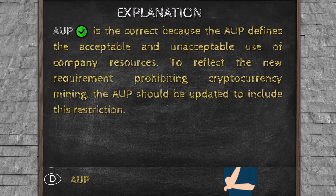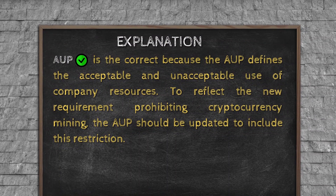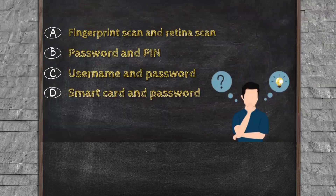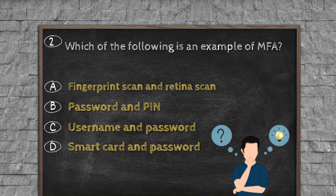Explanation. AUP is the correct answer because the AUP defines the acceptable and unacceptable use of company resources. To reflect the new requirement prohibiting cryptocurrency mining, the AUP should be updated to include this restriction.